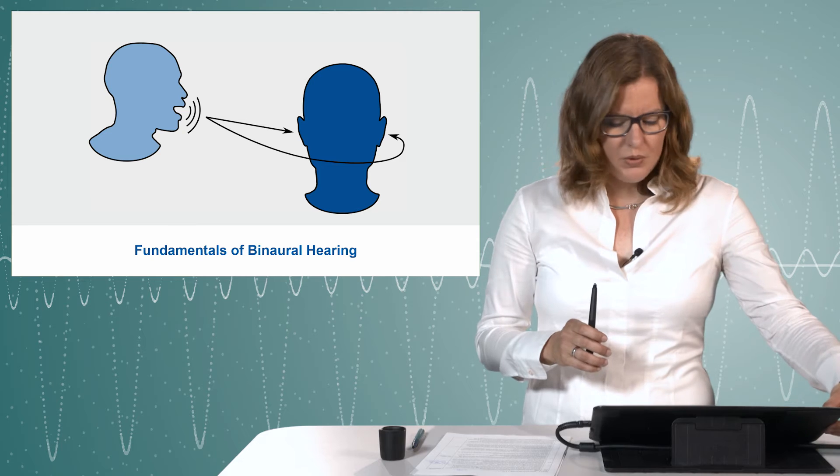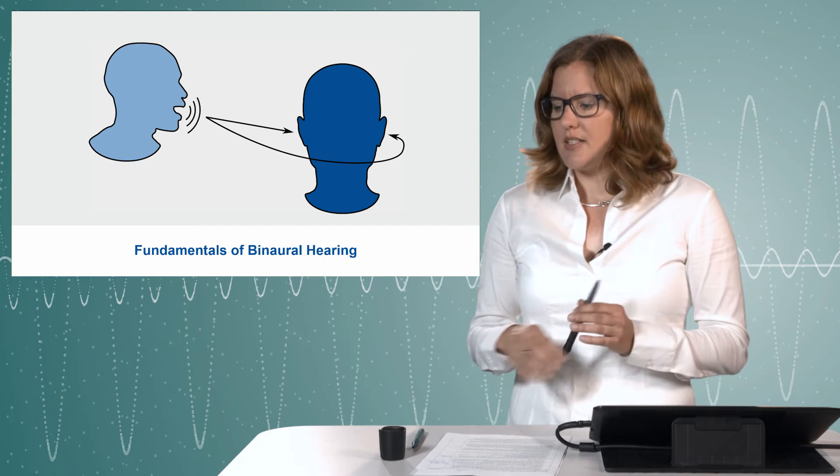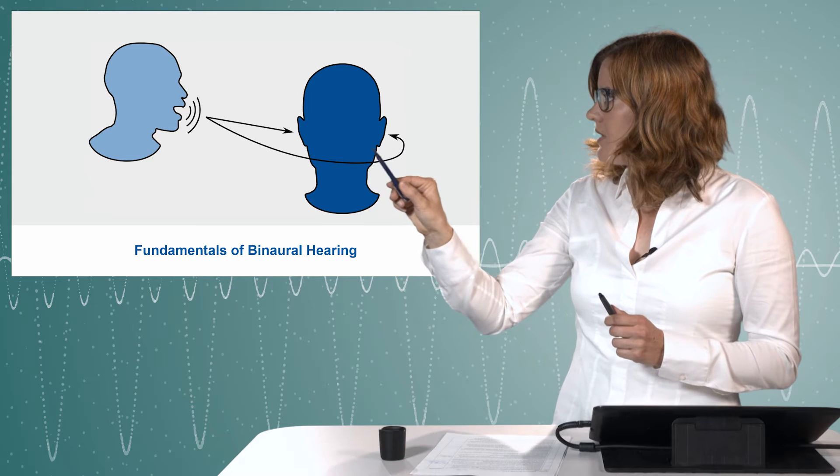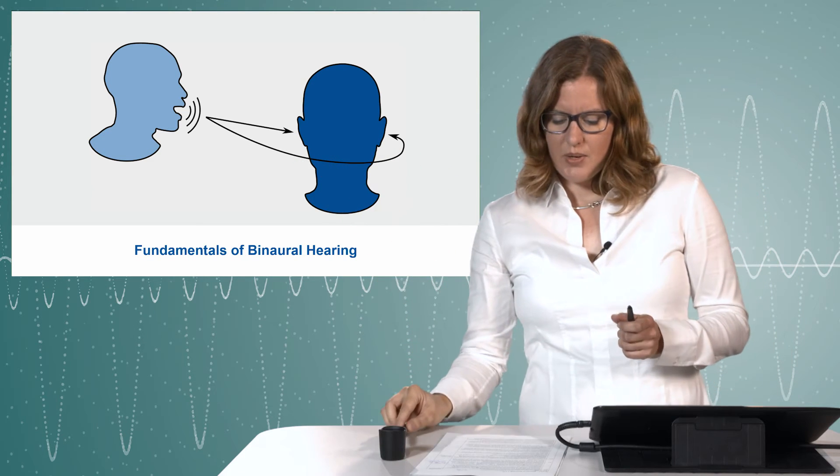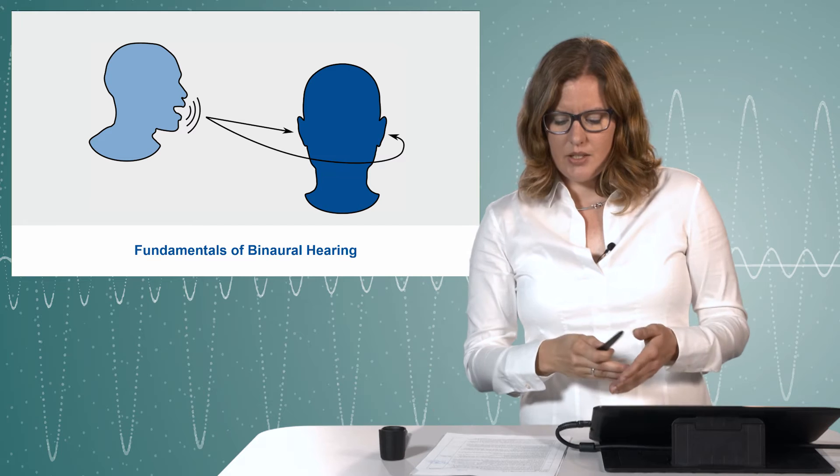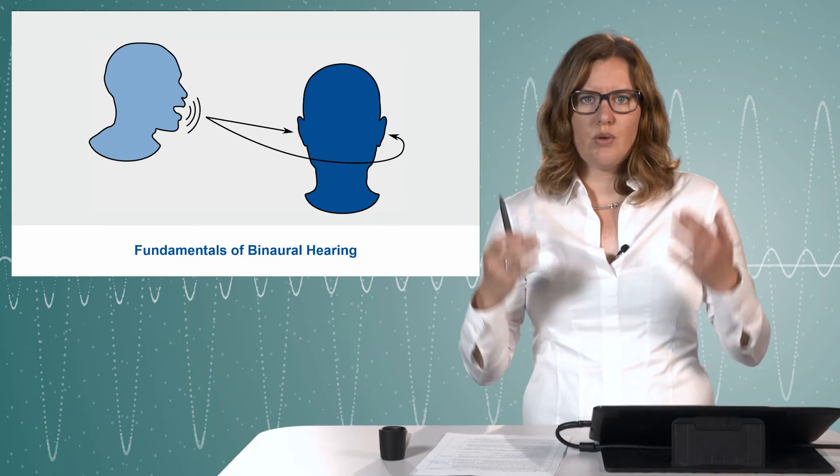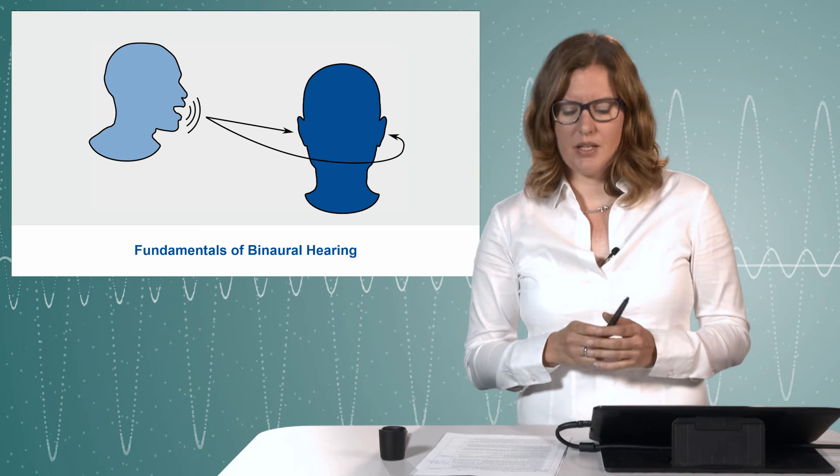The difference from a mono recording is that the sound travels to our two ears, and on the way the sound is changed by reflection, by diffraction, and by scattering due to our head, our torso, and of course our pinna.